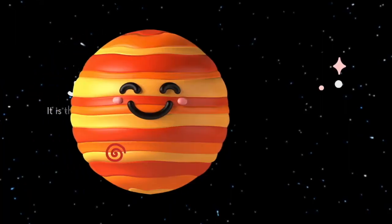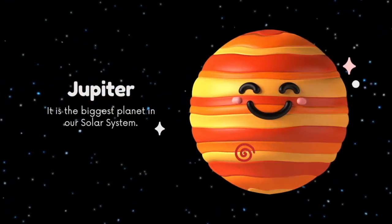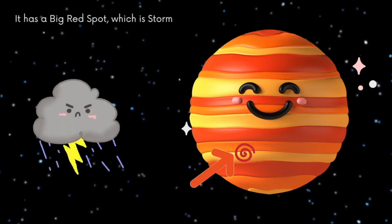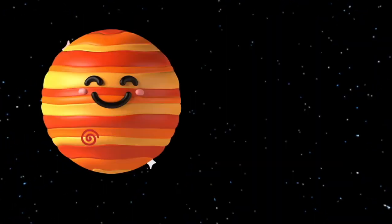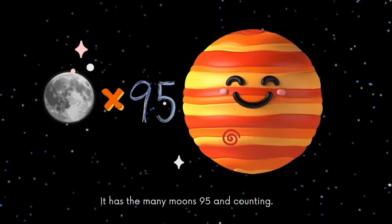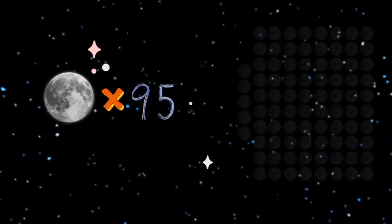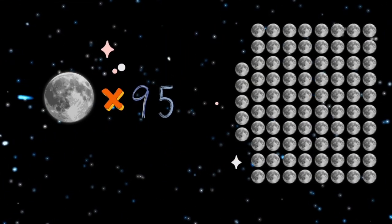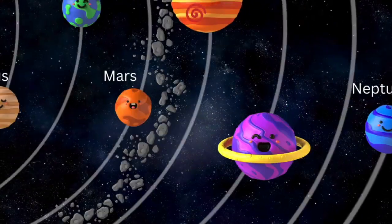And now let's have more fun by learning about Jupiter. It is the biggest planet and it has a big red spot which is a storm that's lasted for many, many years. Jupiter has 95 moons and counting. Wow, that's a lot of moons, Jupiter!